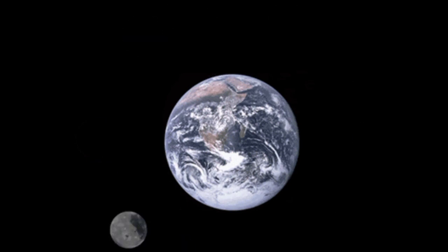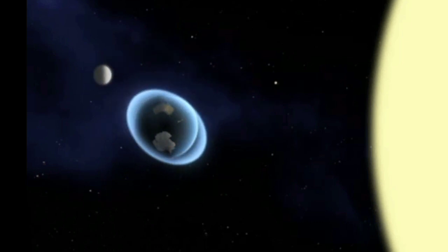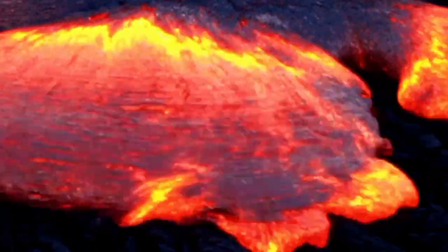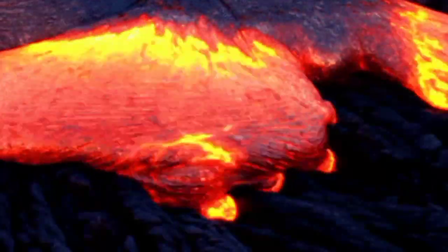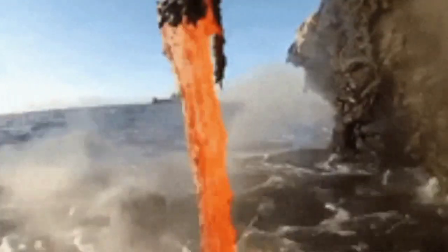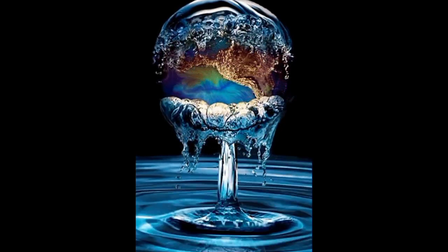Earth used to look very different. At its beginning, Earth was extra hot and full of molten magma. Over the course of a few hundred million years, the planet began to cool and oceans of liquid water formed.